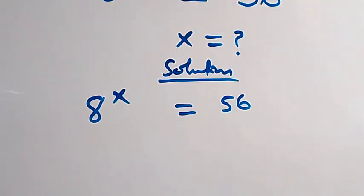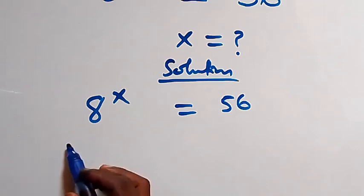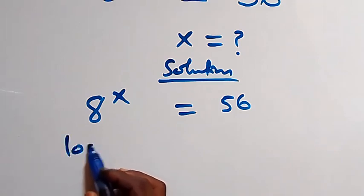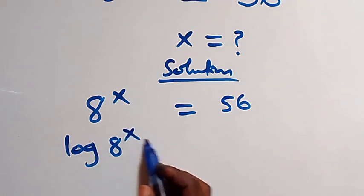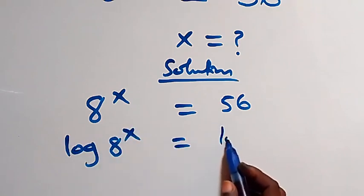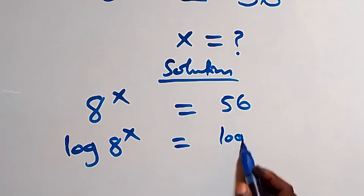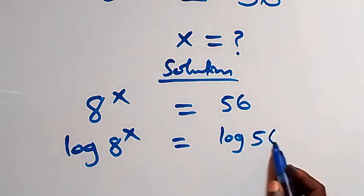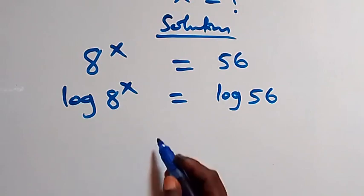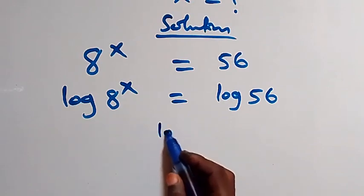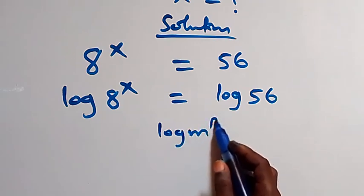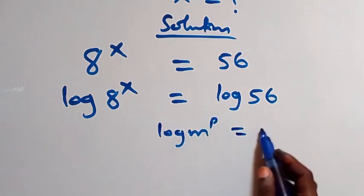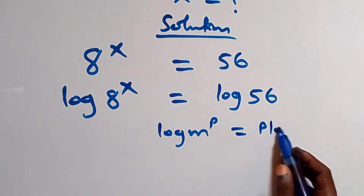From here we can take the log on both sides, and we have log 8 raised to power x equals log 56. We apply the power rule of logarithms: log m raised to power p equals p times log m.